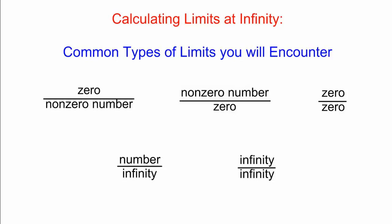For example, maybe you take a limit — let's pretend we're taking the limit as X goes to infinity of our function — and say you see that the form is going to be 0 over a non-zero number, something like 0 over 7. That one's not that strange; 0 over 7 ought to be 0.